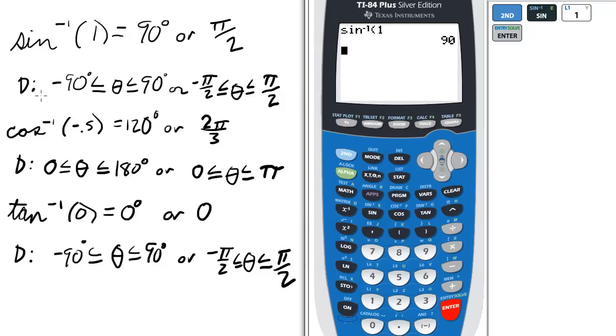One important thing is the usual domain restriction. Theta is usually between negative 90 and 90 degrees for arc sine, or in radians, that's negative pi over 2 to pi over 2.